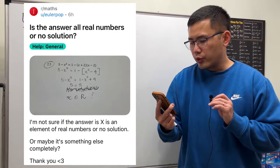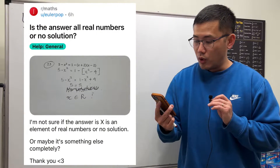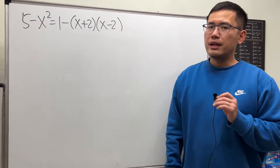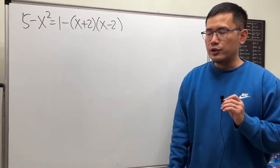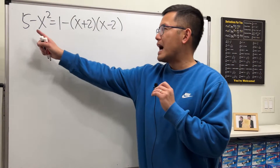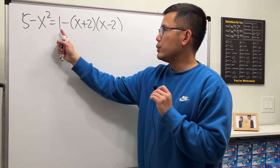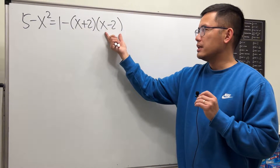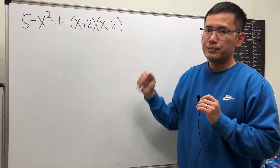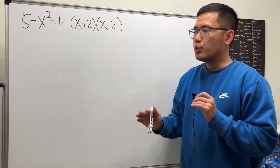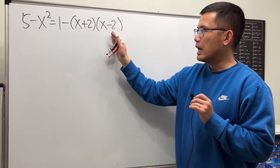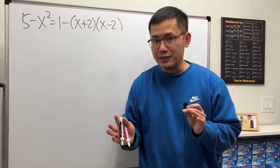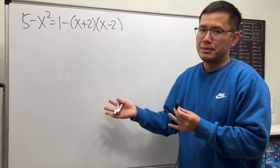Is the answer all real numbers or no solution? Let's take a look at this quadratic equation. We have 5 minus x squared, and that's equal to 1 minus x plus 2 times x minus 2. We will have to first multiply this out, then put the equation in standard form and see what happens.